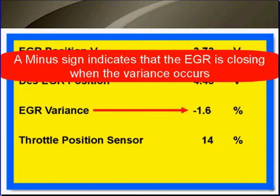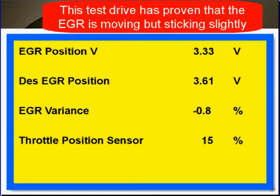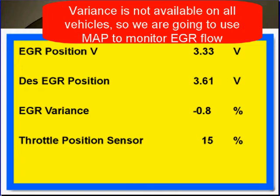A minus sign will indicate that the EGR is closing when the variance occurs. To see a complete picture, you're going to have to graph the scan data. This test drive has proven that the EGR is moving but it's sticking slightly. Variance is not available on all scan data on all vehicles, so we're going to use the MAP to monitor EGR flow.